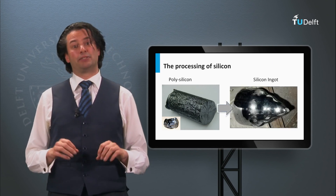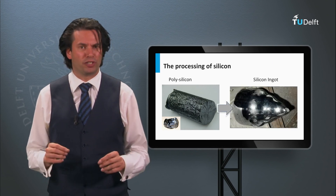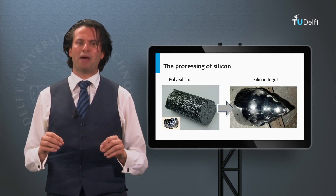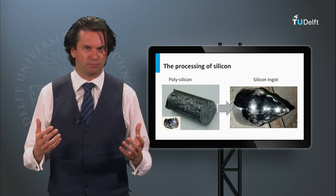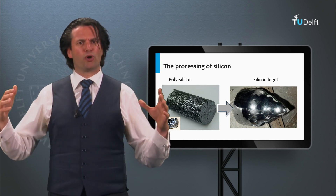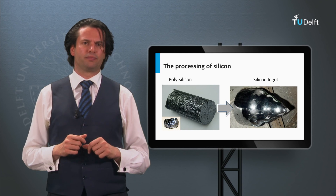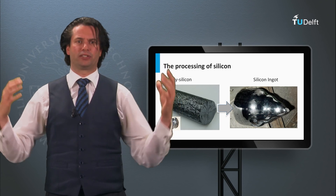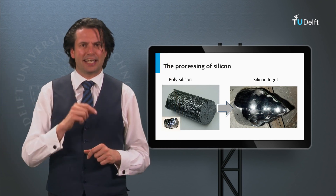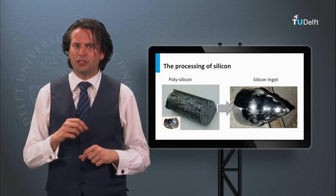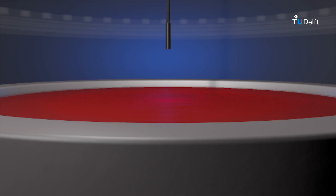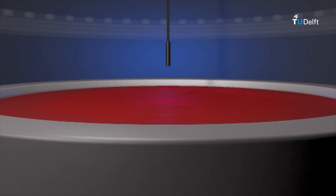The next step is making wafers out of polysilicon, but first we consider two methods to make monocrystalline silicon ingots. Ingots are large blocks of crystalline silicon. Monocrystalline ingots consist of one big crystal. In the next animation you will be introduced to the Czochralski processing method, as developed by Polish scientist Jan Czochralski in 1918.